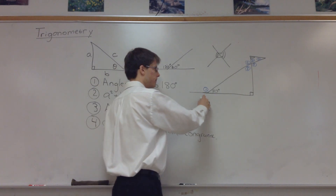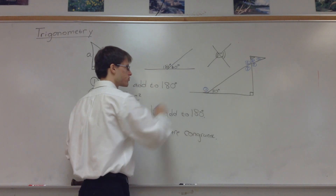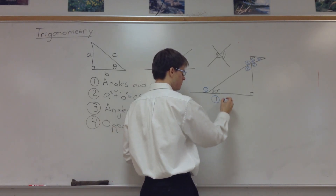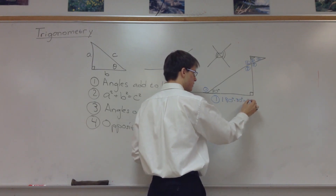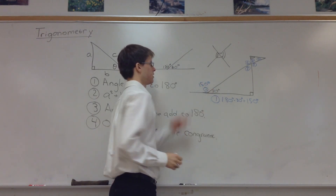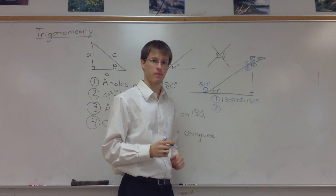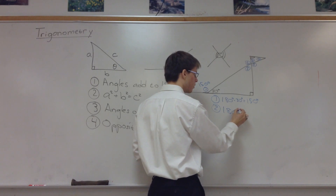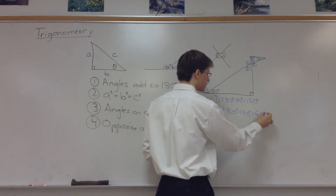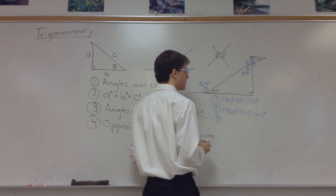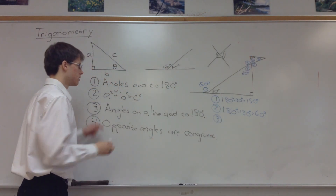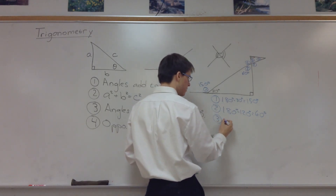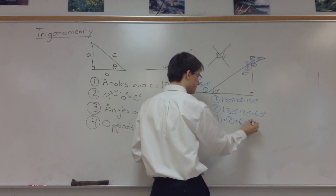Starting with angle 1: we have a straight line, so angles on a straight line add to 180. Angle 1 is 180 minus 30, which equals 150 degrees. Angle 2 is the third angle in our triangle. The angles add to 180, so 90 plus 30 is 120, meaning angle 2 is 180 minus 120, which equals 60 degrees. Angle 3 equals angle 2 because of rule four — opposite angles are congruent — since the lines form a perfect X, giving us 60 degrees.